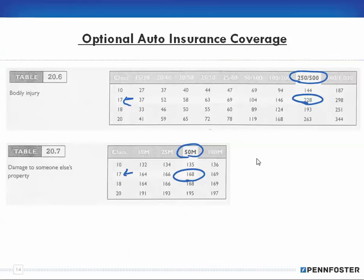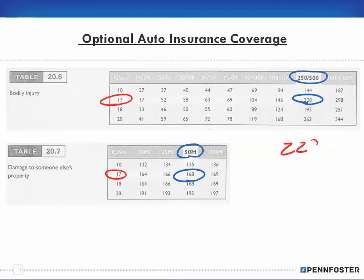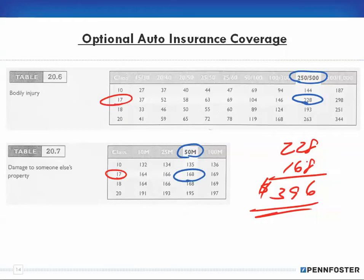It depends on what the scenario is asking as to the coverage amounts you'd choose. Basically, you decide what bodily injury coverage and what property damage coverage you want. Depending on your class — say class 17 — you take the bodily injury amount of $228 and the property amount of $168, add them together, and that becomes your total premium based on those choices.